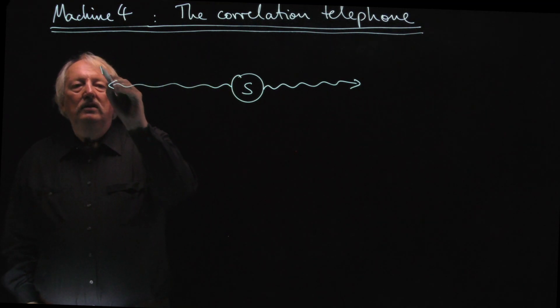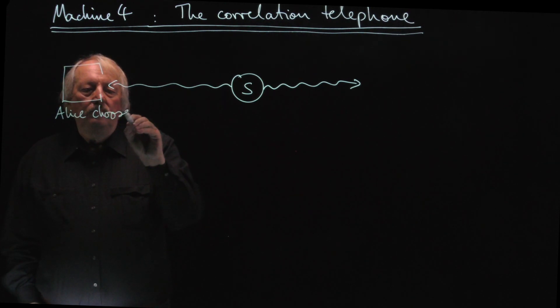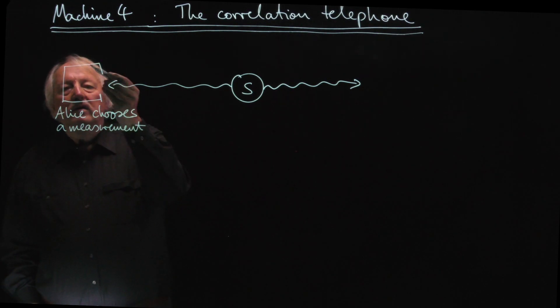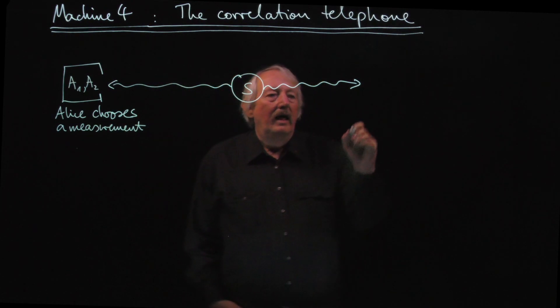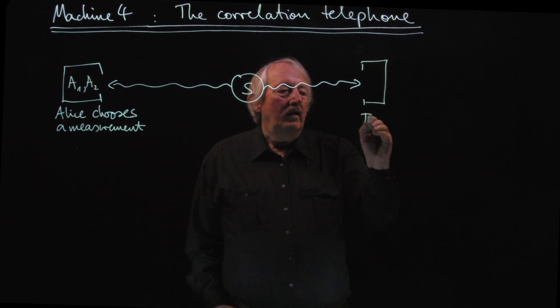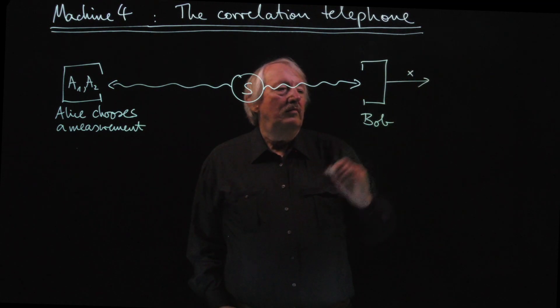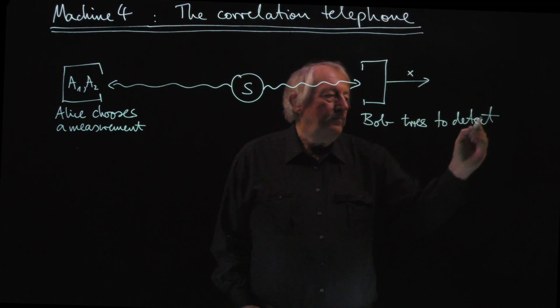What Alice is able to do is very limiting. But she could actually choose a measurement and it could be maybe just call them A1 and A2, the possible measurements she could make. Just two different ones will actually be enough. And Bob also gets a particle and he wants to detect something.